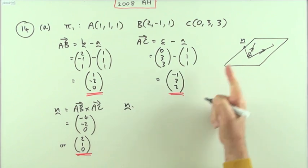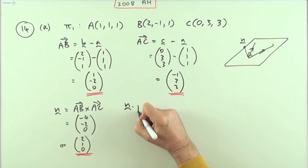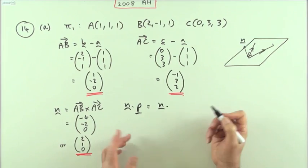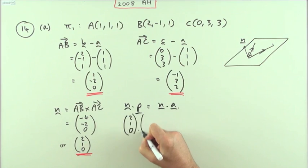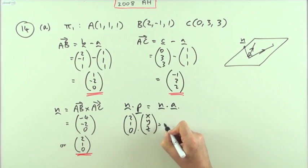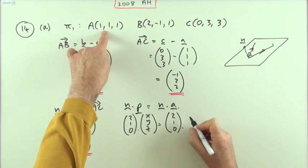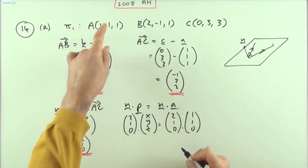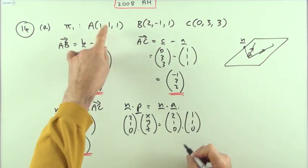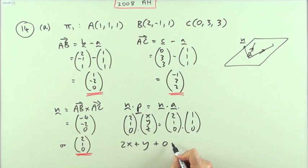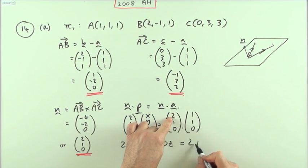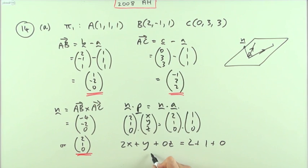Now it's just a case of saying the scalar product of the normal with any point in the plane equals the scalar product of the normal with any particular point. So n · r = n · A. The normal is (2, 1, 0), any point is (x, y, z), and the particular point A is (1, 1, 1). Multiplying out: 2x + y + 0z = 2 + 1 + 0. So the equation of the plane is 2x + y = 3.